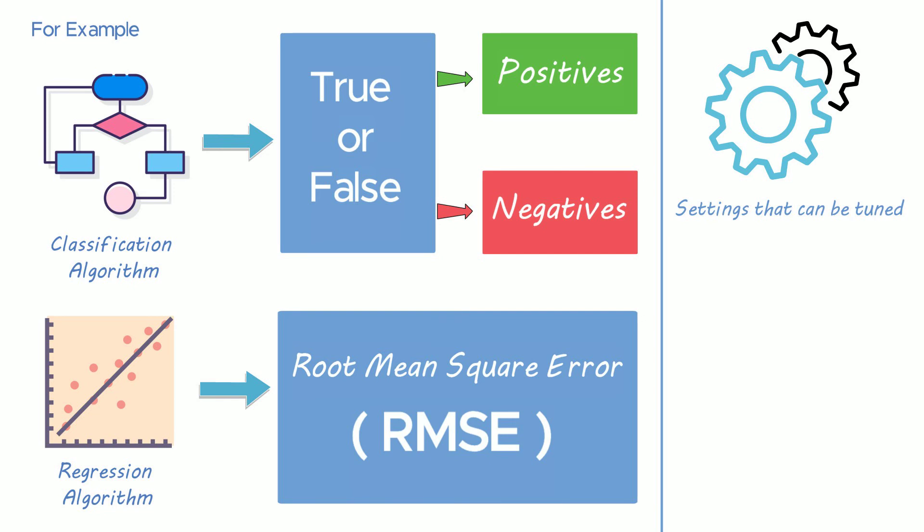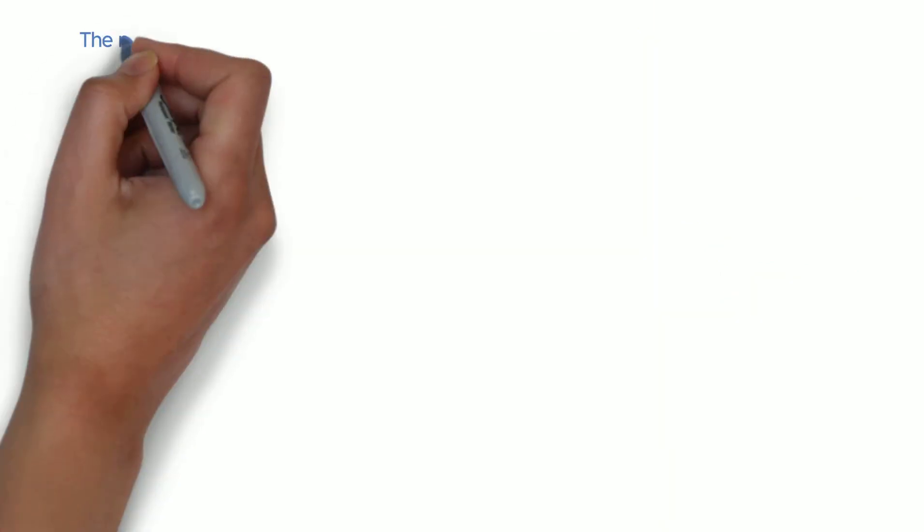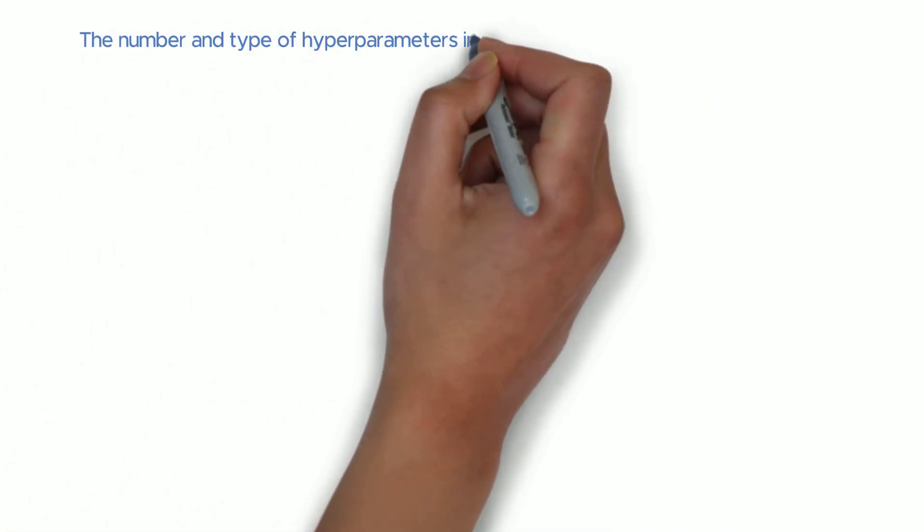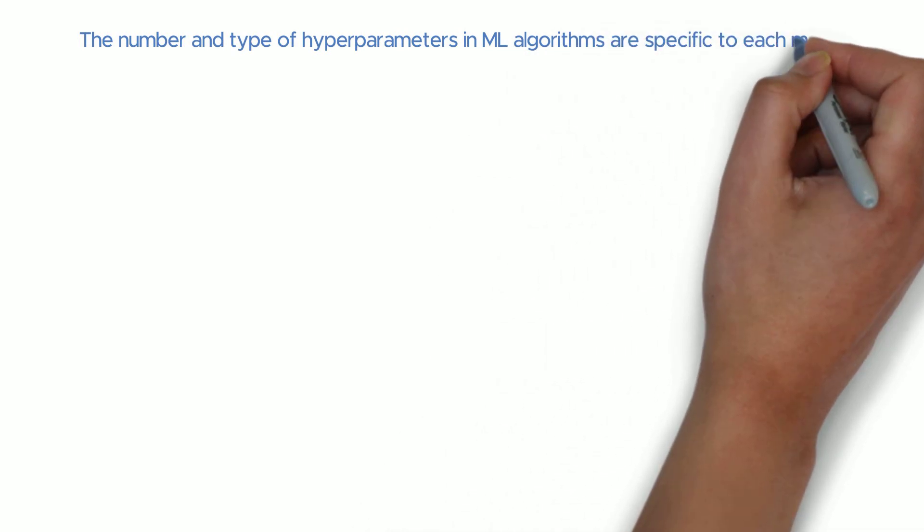Settings can be tuned to control the behavior of ML algorithm and the resulting model architecture are referred to as hyperparameters. The number and type of hyperparameters in ML algorithms are specific to each model.